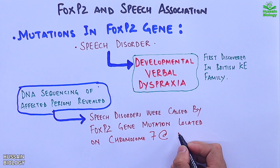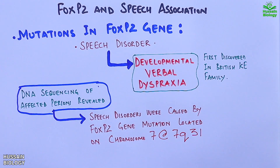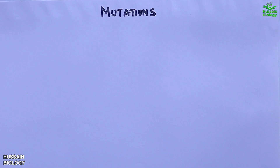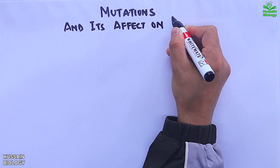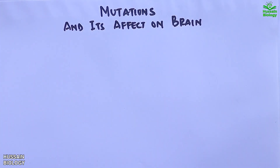This FOXP2 gene mutation is located on chromosome number 7 at position q31.